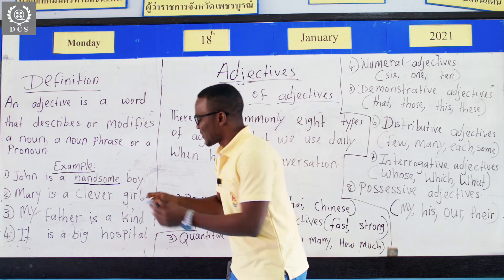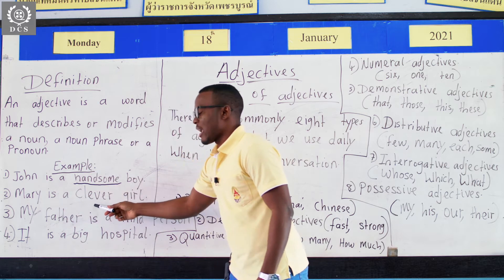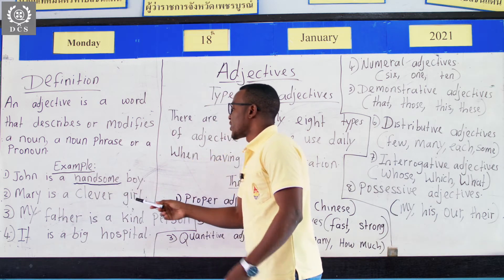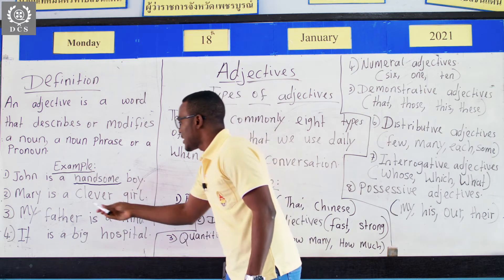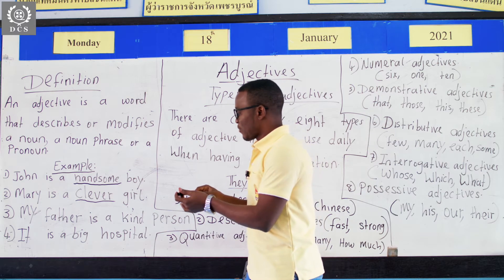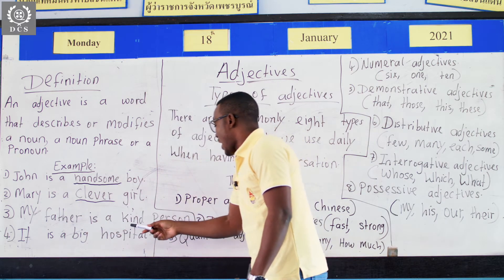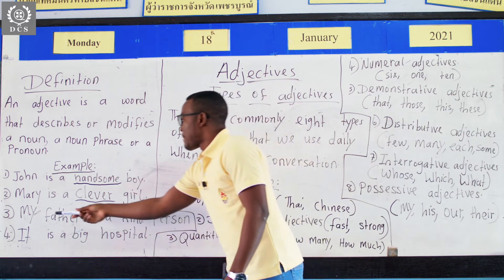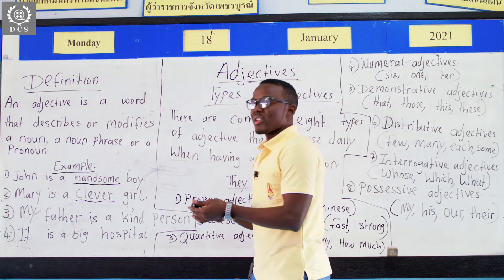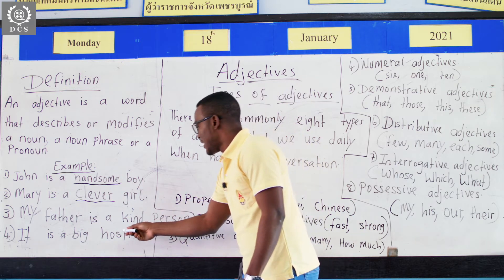Two: Mary is a clever girl. So the adjective here is 'clever.' Three: My father is a kind person. So we can see here that the adjective in this sentence is 'kind.'